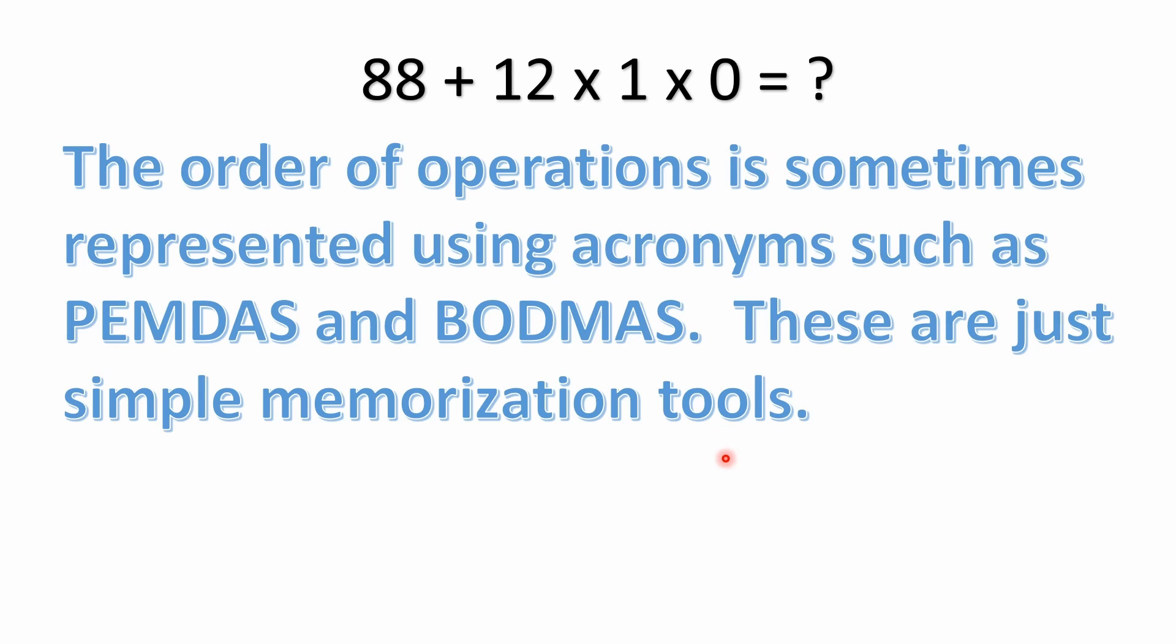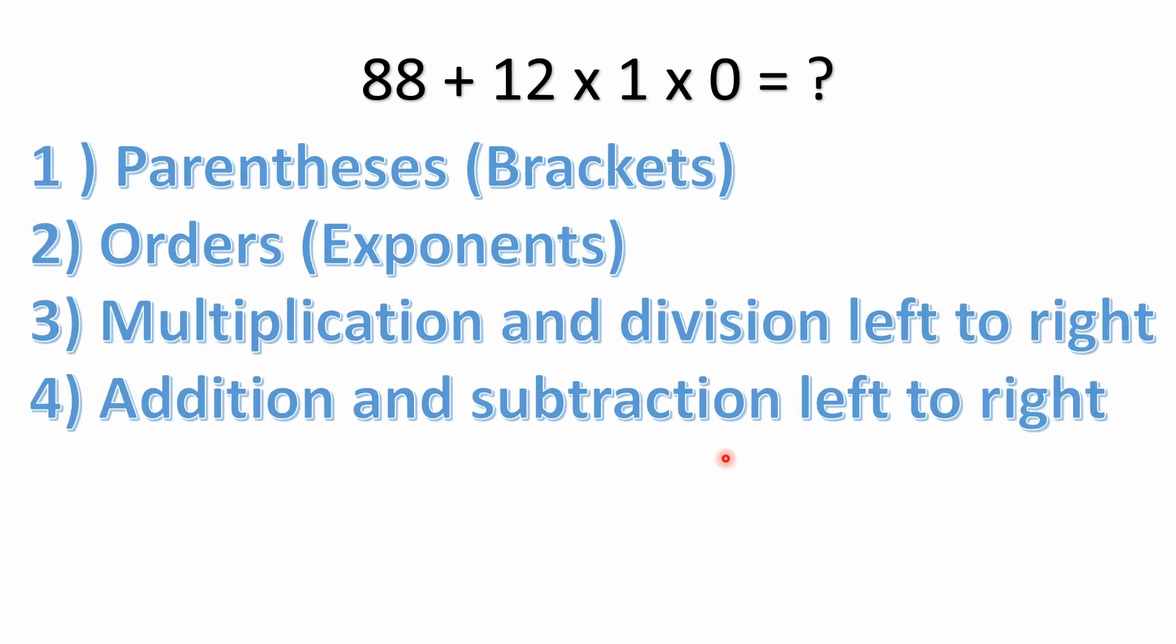You got to be careful with these acronyms. They're six letters but they really only represent four steps. That would be, first, your parentheses or brackets. Number two would be orders (from BODMAS) or exponents from PEMDAS, which also includes things like square roots. The third step would be multiplication and division, left to right.